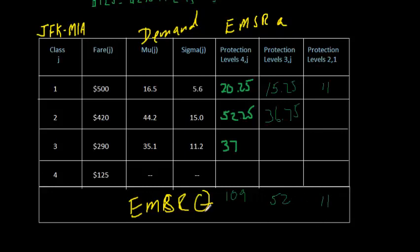So now we have our EMSR protection levels for these three sets of classes. As the $125 customers arrive, they won't have access to 109 seats that have been protected for the fares above 125. Then as the $290 customers arrive, they won't have access to these 52 seats, and the $420 customers will have access to any seats except for these 11.